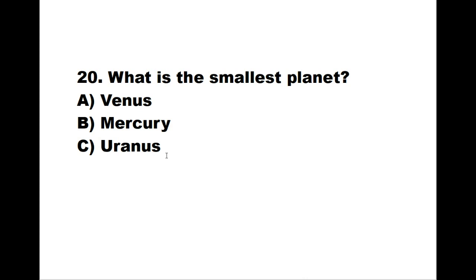Number twenty: what is the smallest planet? A: Venus. B: Mercury. C: Uranus. The correct answer is B, Mercury.